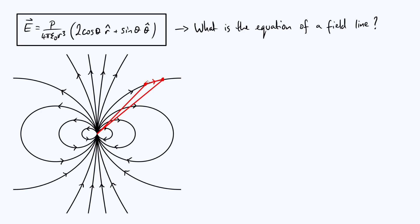So we've got our little displacement vector, which has some component in the r-hat direction — the radial unit vector — and some component in the theta-hat direction. We call the displacement in the r-hat direction dr, and the displacement in the theta-hat direction r·dθ, where we multiply by r to convert the angular displacement into a linear displacement. We're also assuming these two points are very, very close together in doing this.